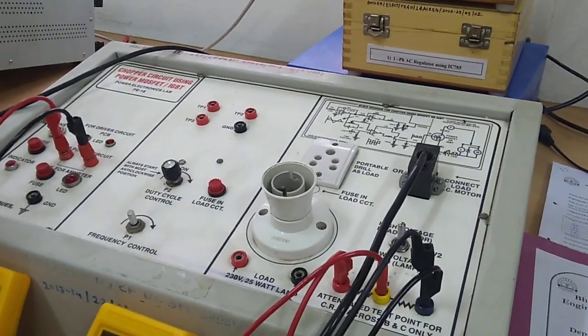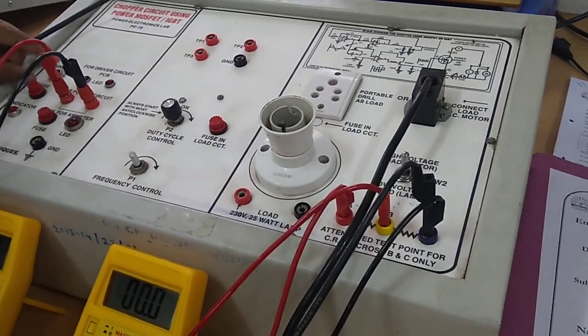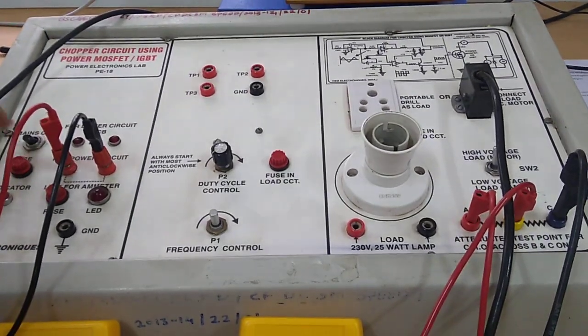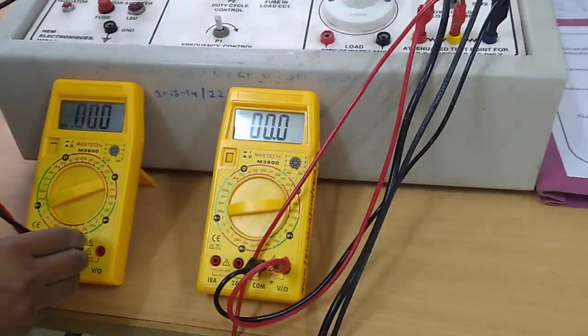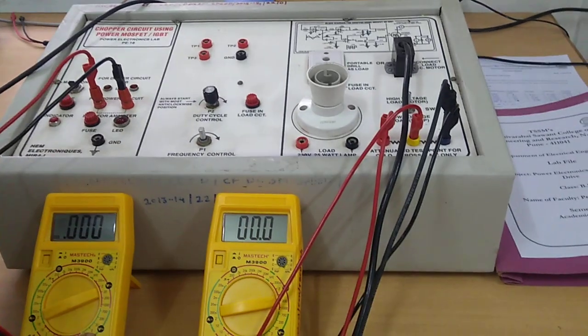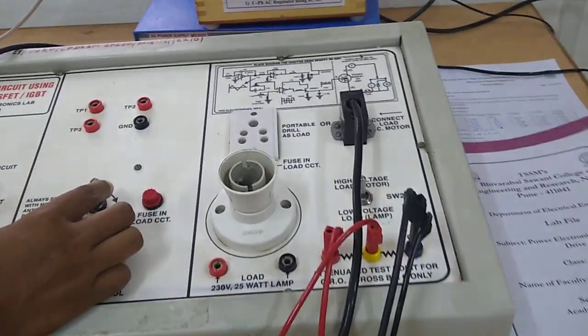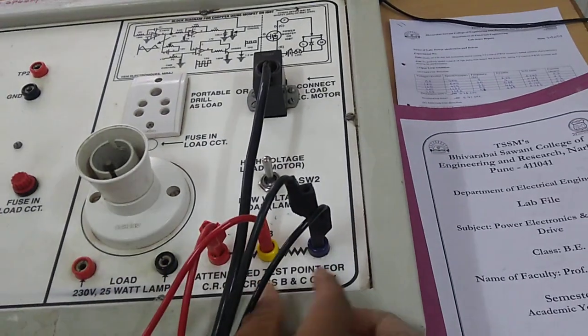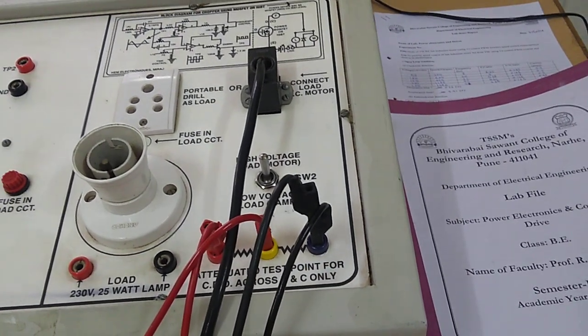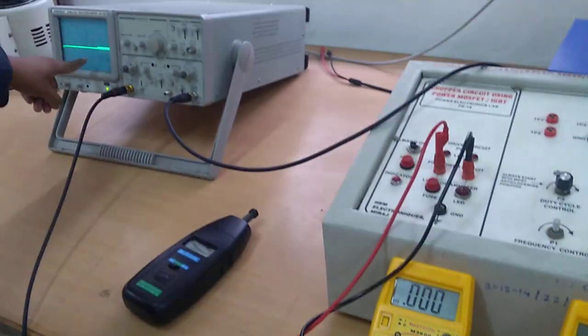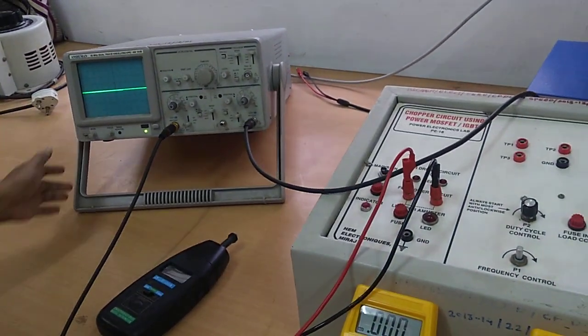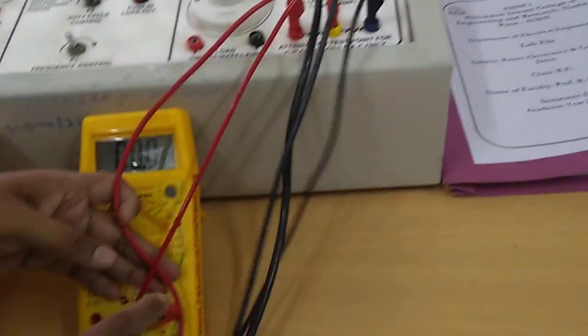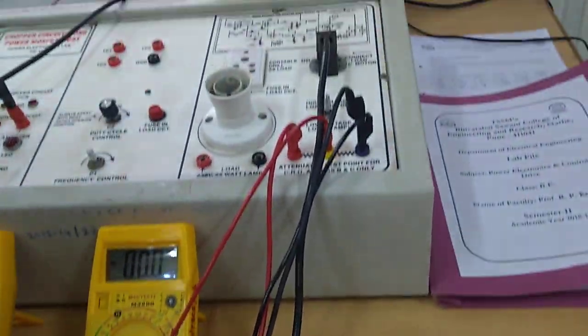So this is the trainer kit for the chopper fed DC series motor speed control. This is the switch from where we make the main supply on. This is the link for the armature to make the circuit closed. Then this is the pot by which we are varying the duty cycle. These are the three terminals A, B, C. Across B and C we have connected CRO, on which we are going to observe the duty cycle and the waveforms of the armature voltage. Across A and C we have connected one voltmeter. So now we will switch on the supply.